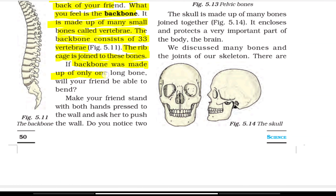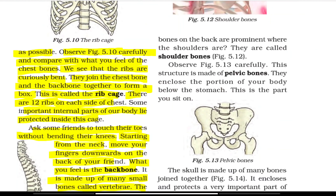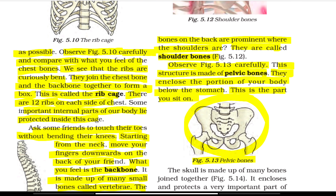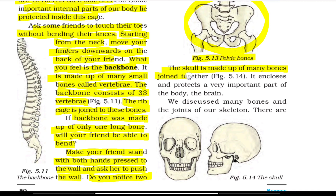If the backbone were made up of only one long bone, we would not be able to bend. There are two prominent bones on the back where the shoulders are — they are called shoulder bones. The pelvic bones enclose the lower part of your body below the stomach; this is the part you sit on. The skull is made up of many bones joined together. It encloses and protects a very important part of the body — the brain.